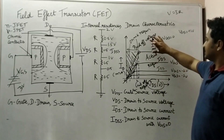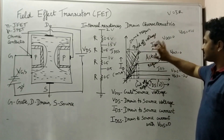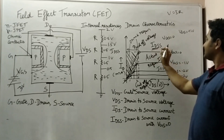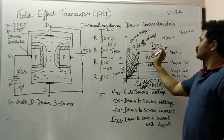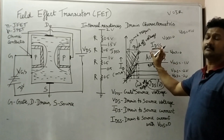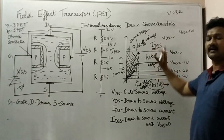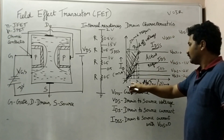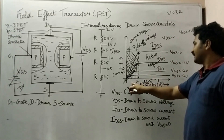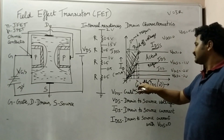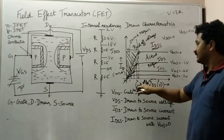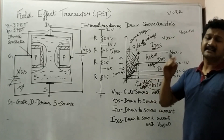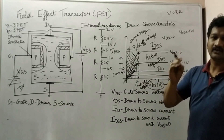The region where drain-to-source current becomes and remains constant is called the active region. There is also a cutoff region, reached by applying a certain gate potential.